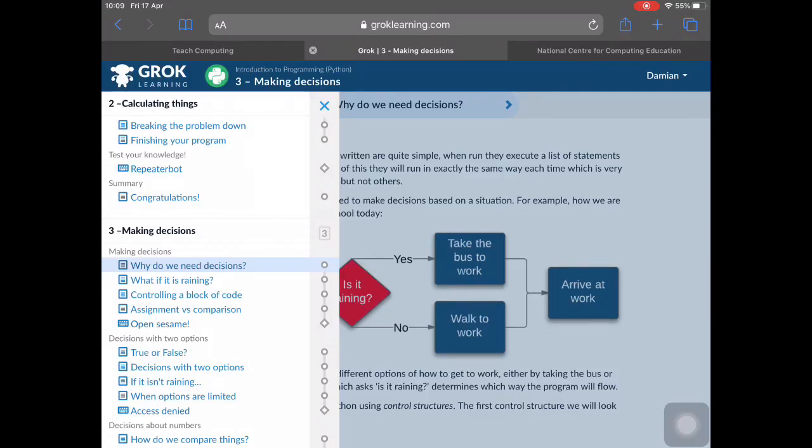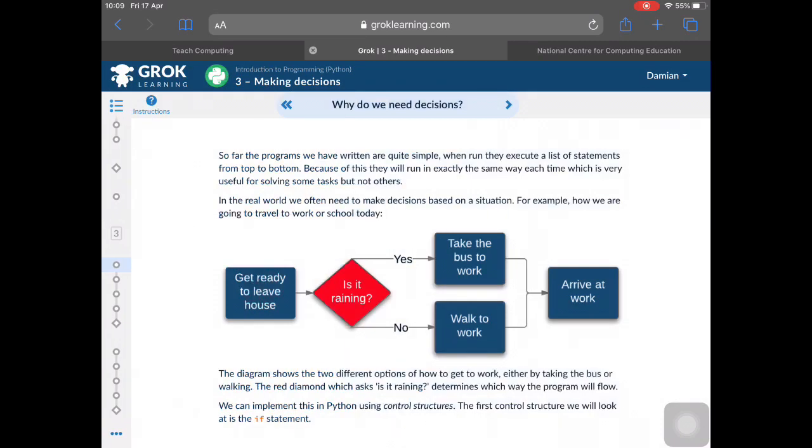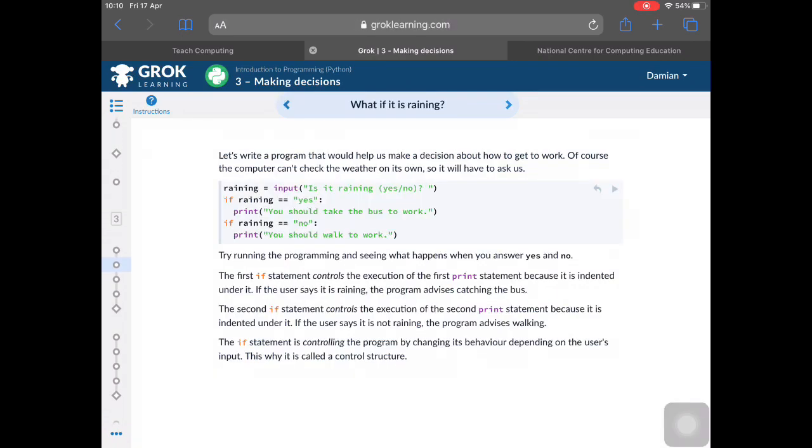Section three is about making decisions. In this case, we're going to look at a particular thing like, is it raining here? And if it is raining, we're going to go up the yes route and say take the bus to work and arrive at work. On the other hand, if it's not raining, we want to walk to work. What we don't do is we don't do both routes. So we're going to take one or the other. A decision allows us to go down one piece of code or another.